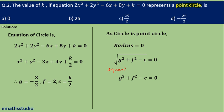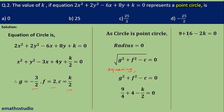Squaring both sides gives g square plus f square minus c equals 0. Substituting, we get 9 by 4 plus 4 minus k by 2 equals 0. Multiplying throughout by 4: 9 plus 16 minus 2k equals 0. This gives minus 2k equals minus 25, so k equals 25 by 2. The answer is option C, that is 25 by 2.